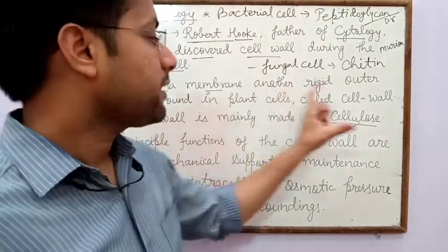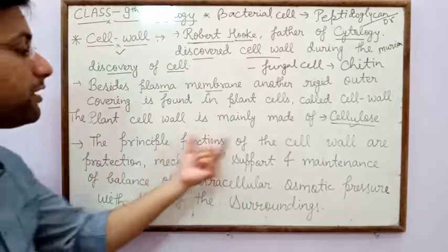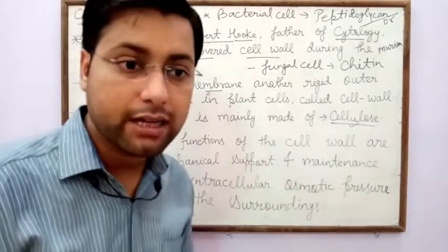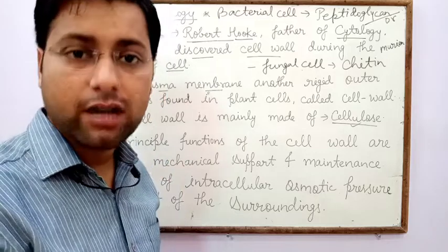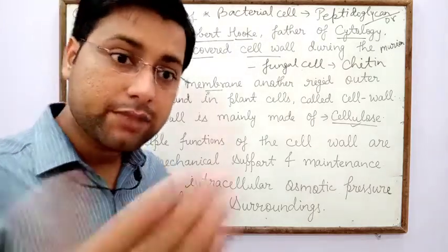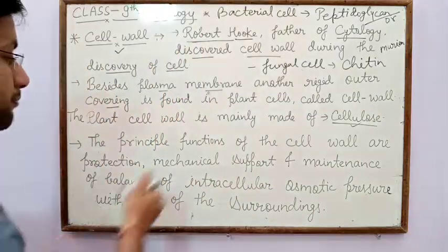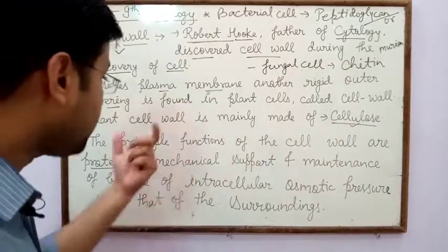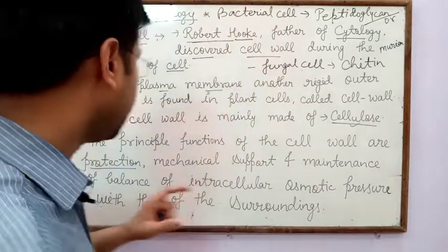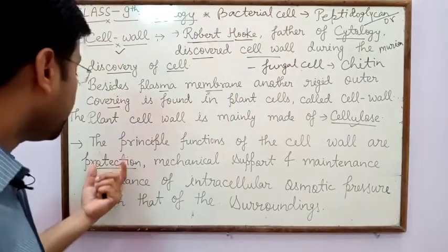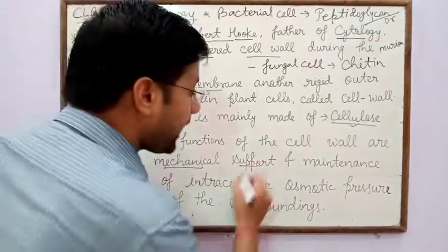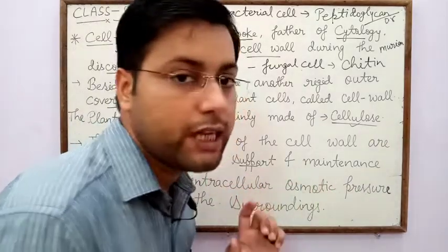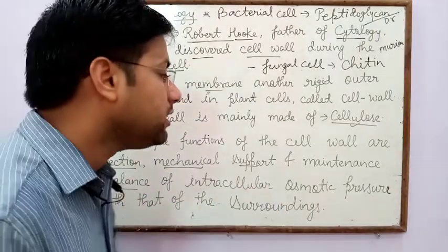In plant cell, cell wall is made up of cellulose, which is a type of carbohydrate. The principal functions of the cell wall include protection — it protects the plant cell, bacterial cell, and fungal cell as the outer covering. It also provides mechanical support and maintenance of the balance of intracellular osmotic pressure with that of the surrounding.